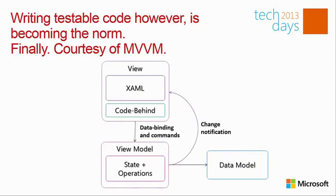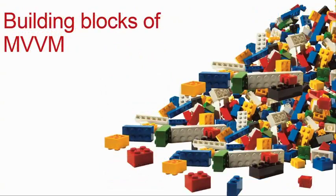In MVVM you still have your XAML code, but that XAML is now binding itself to what is known as the ViewModel. The ViewModel exposes state and operations so that the view can bind on it. There is still code-behind, but it's really limited — it should not be code that interacts with the model. The ViewModel exposes state as properties and operations as commands, and it is the one that will directly interact with the model. There should never be a direct line from the view or code-behind to the model.